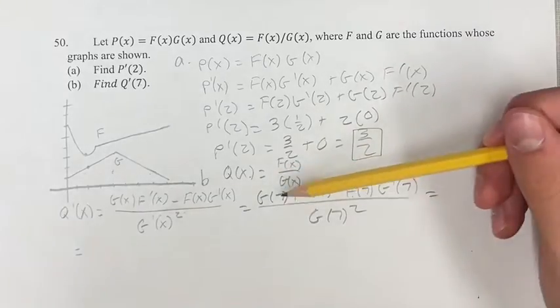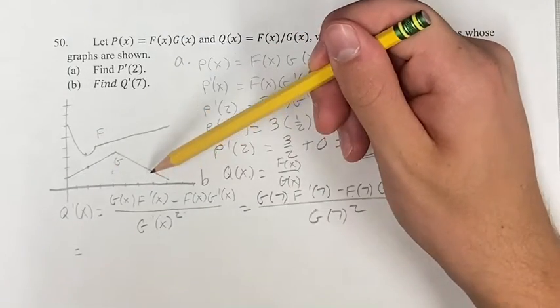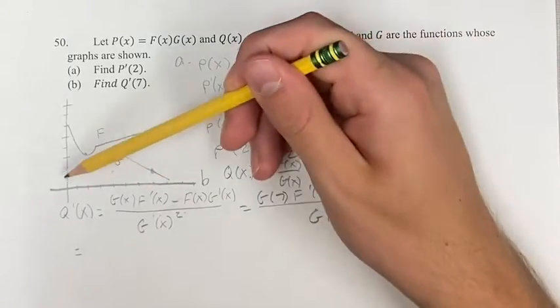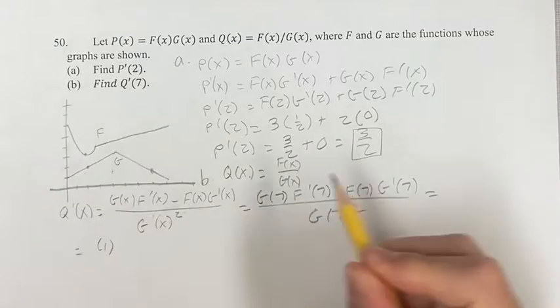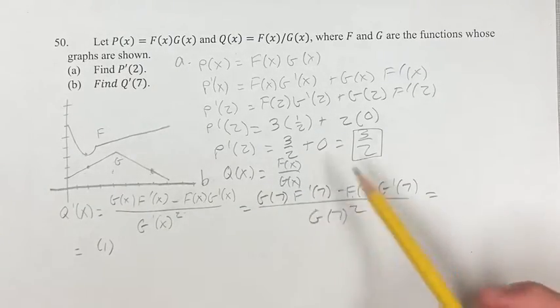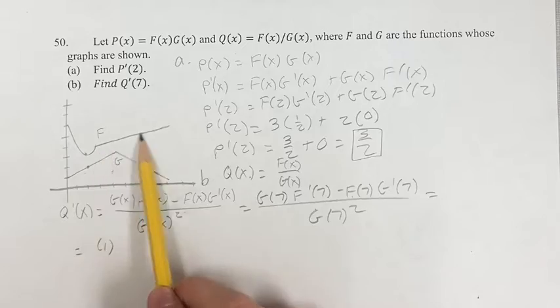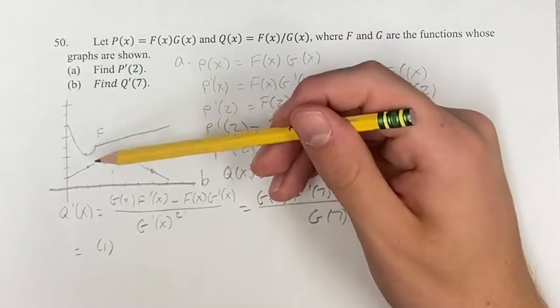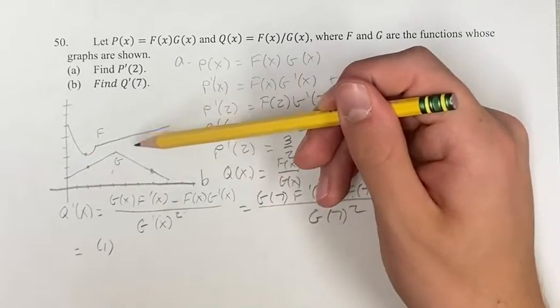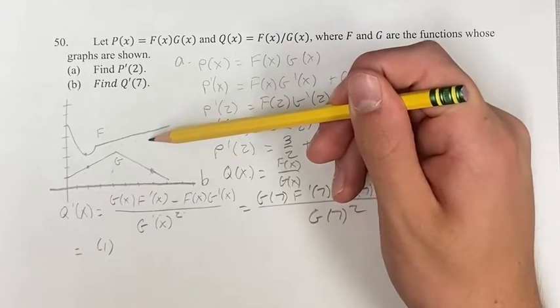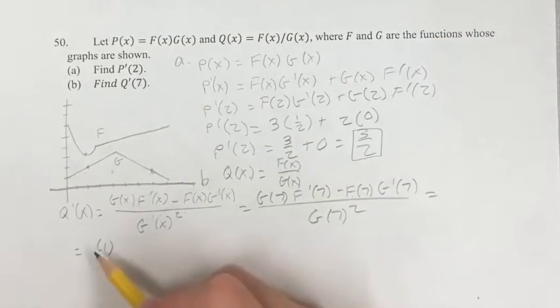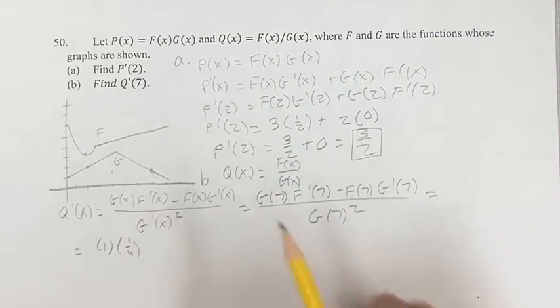So G(7), finding on this graph right here, is going to be this point right here, which is 1. The derivative of F at 7 is the slope of this line right here, where we go 1, 2, 3, 4 to the right, and 1 up. So it's 1 over 4 as your slope, rise over run.